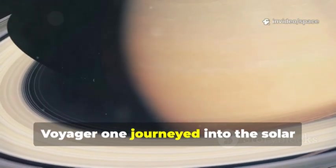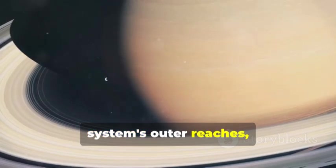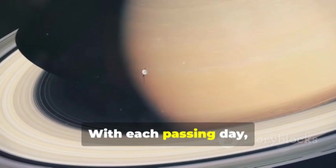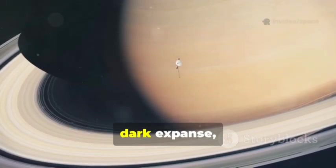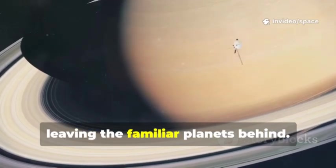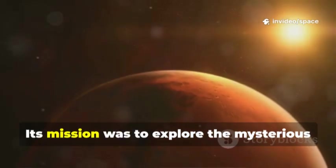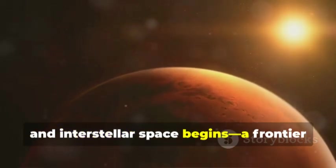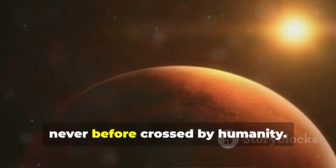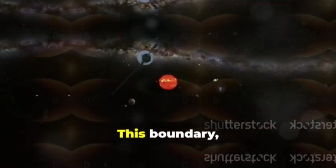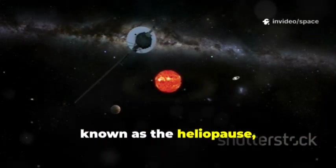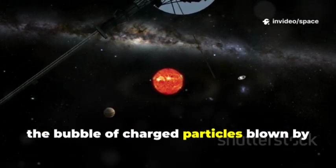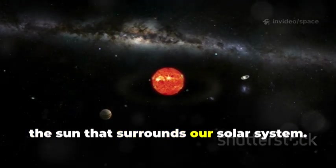After Saturn, Voyager 1 journeyed into the solar system's outer reaches, venturing farther than any spacecraft before it. With each passing day, it moved deeper into the cold, dark expanse, leaving the familiar planets behind. Its mission was to explore the mysterious boundary where the sun's influence fades and interstellar space begins, a frontier never before crossed by humanity. This boundary, known as the heliopause, marks the very edge of the heliosphere, the bubble of charged particles blown by the sun that surrounds our solar system.